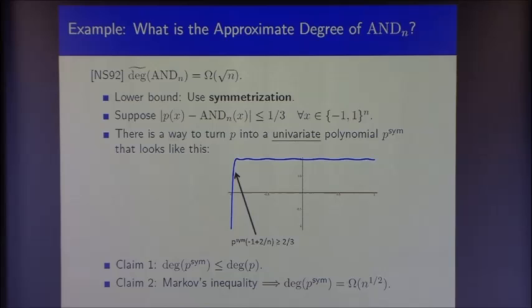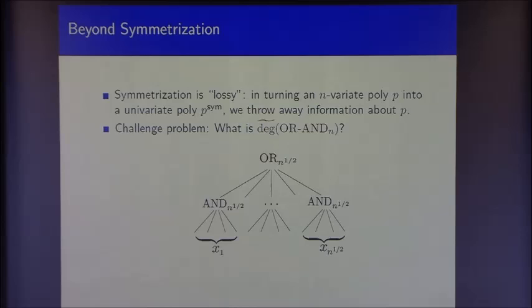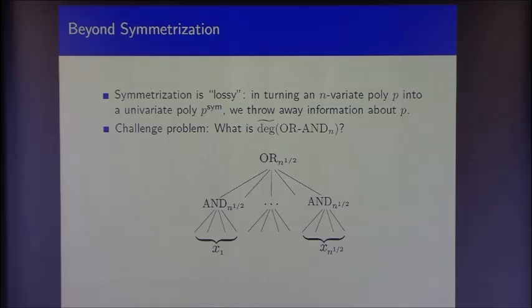Symmetrization was the primary technique for proving approximate degree lower bounds for many years. This talk will focus on techniques for going beyond symmetrization. Symmetrization, while very powerful, appears to be lossy: in turning an n-variate polynomial into a univariate one, we throw away a lot of information. For symmetric functions we still have enough information to prove tight lower bounds, but for non-symmetric functions we run into a barrier. There was a long-standing challenge problem to resolve the approximate degree of a function known as the two-level OR-AND tree.